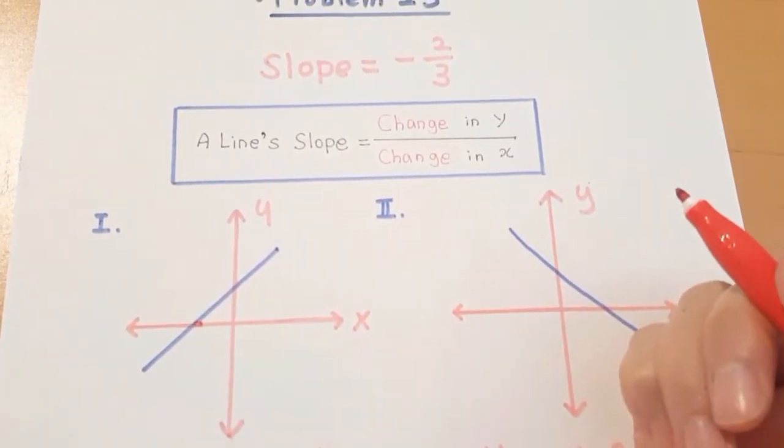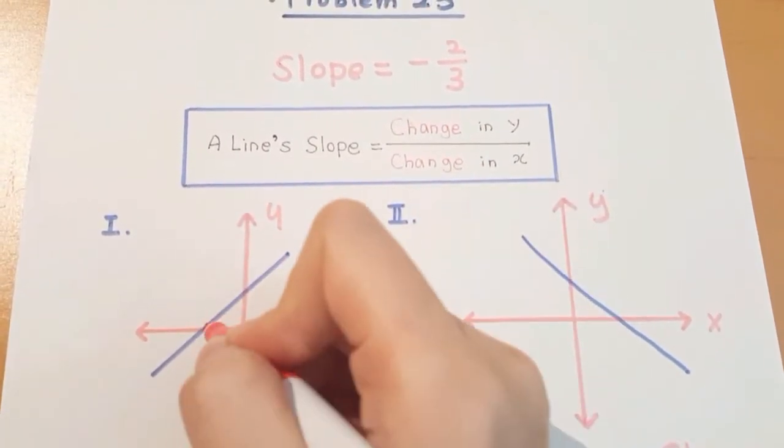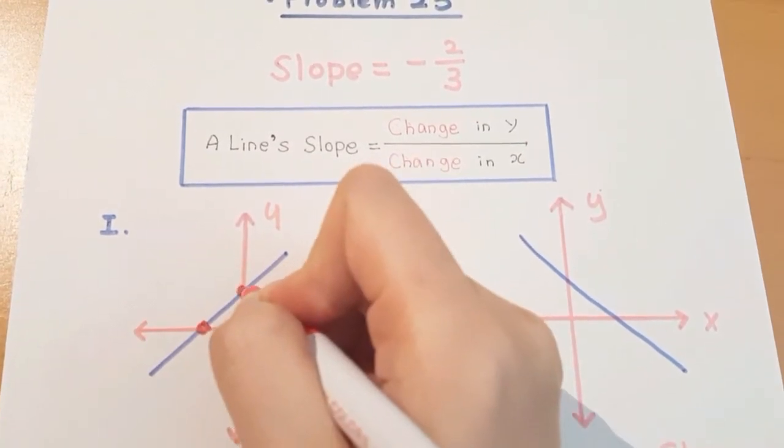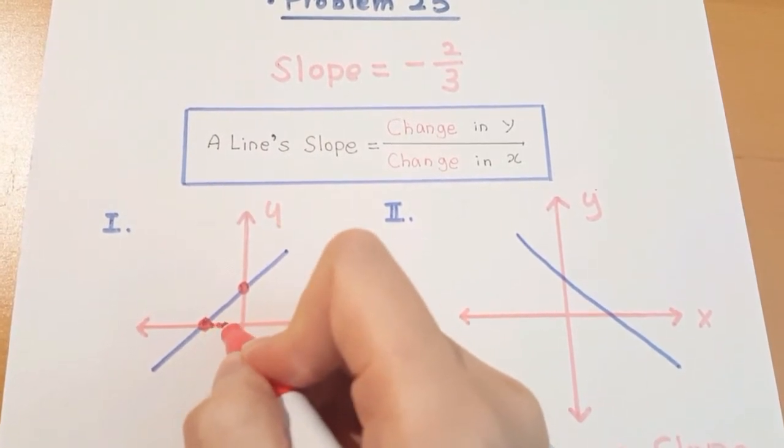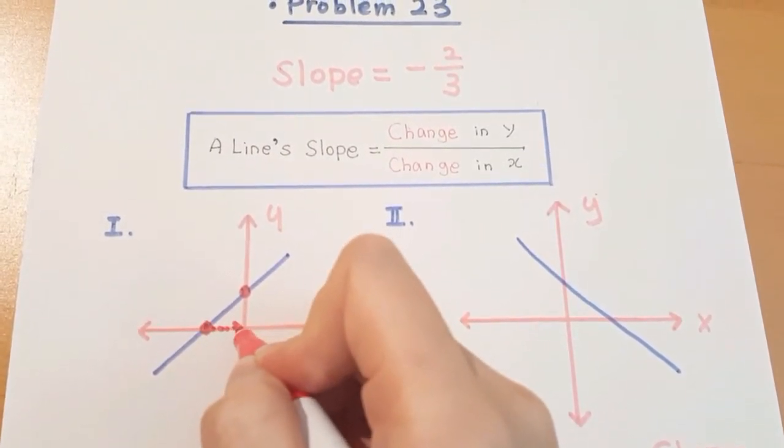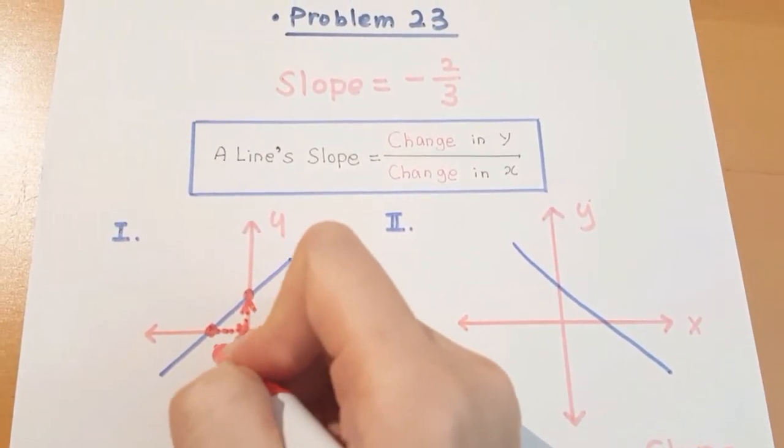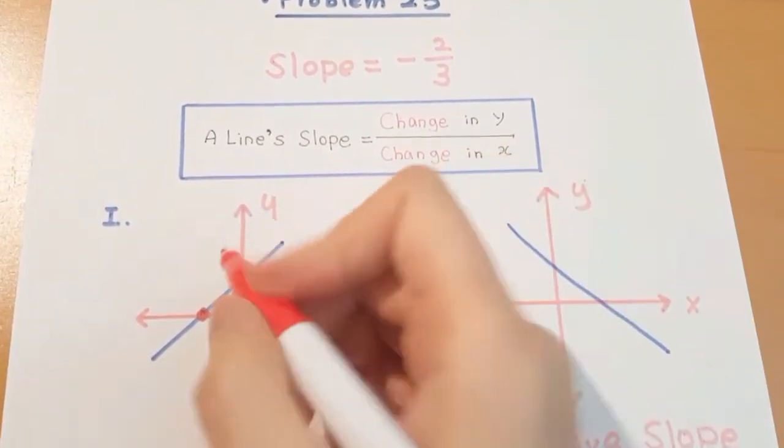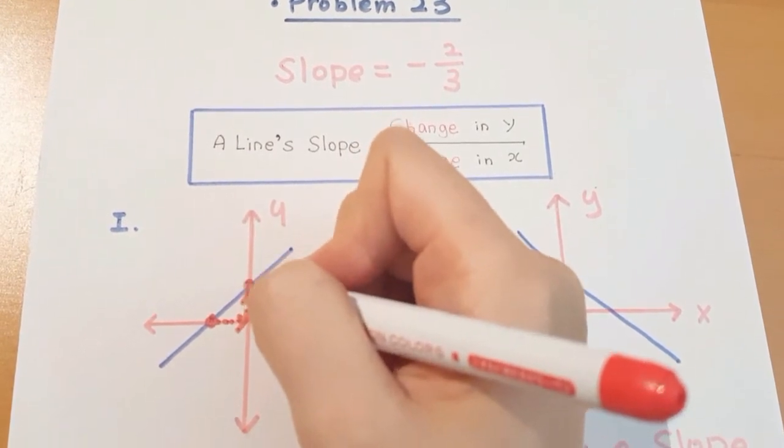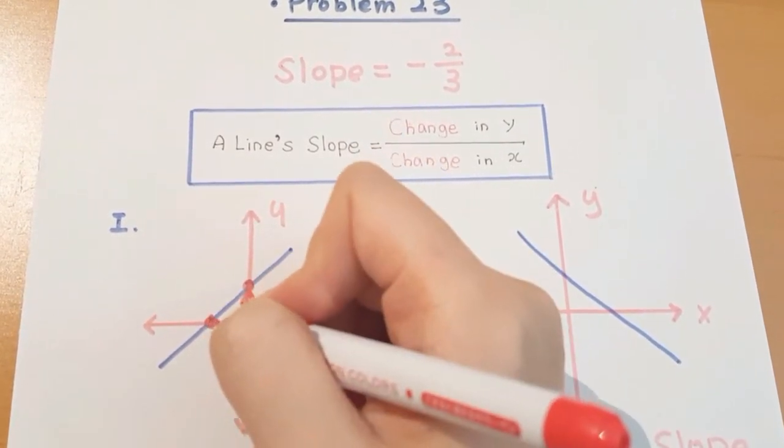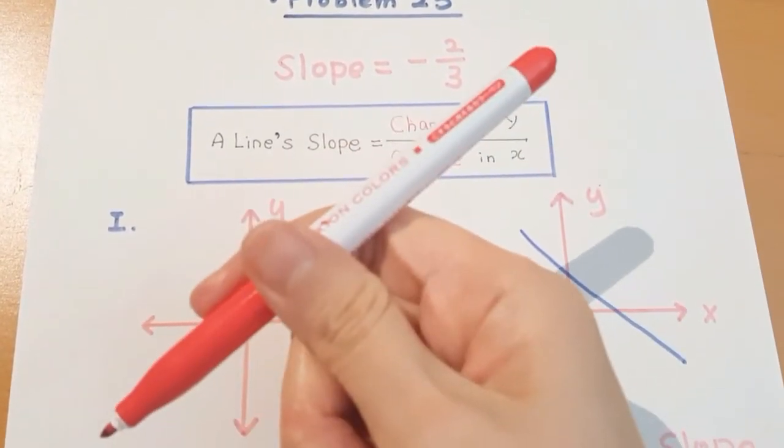So let's say we have two points here and here. And this is a change in X, this is a change in Y. And Y increases as X increases, and this means this line is positive.